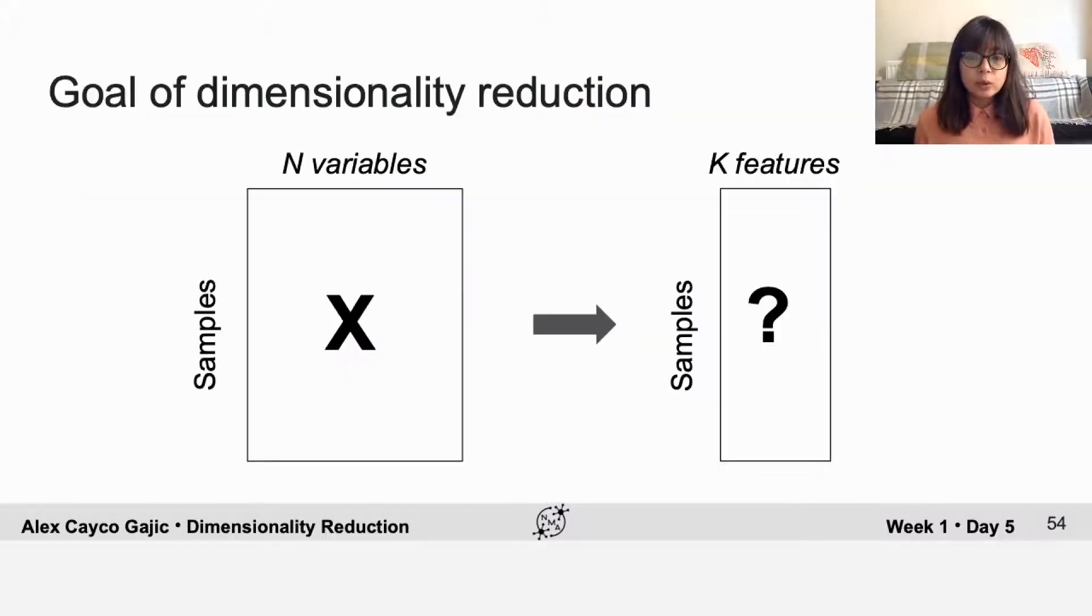Again, the goal of dimensionality reduction is to reduce your data from a large number of variables that you're observing directly to a smaller number of features that can capture much of the structure in your data.